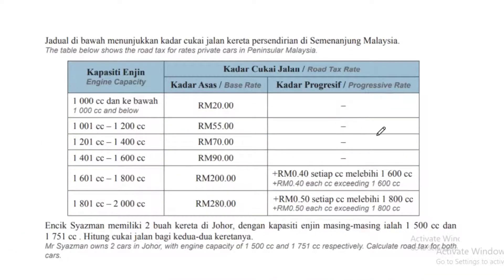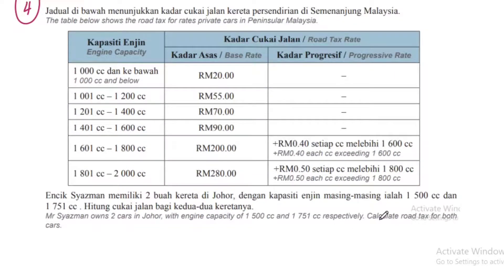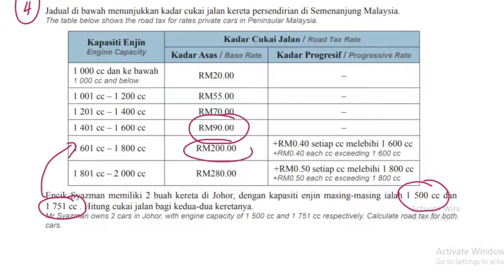Soalan keempat: cukai jalan kereta persendirian di Semenanjung Malaysia. Kalau Sabah Sarawak, kadar lain. Encik Sazman memiliki dua buah kereta di Johor — kapasiti 1500cc satu, 1700cc satu. 1500cc duduk kat sini dalam jadual, 1700cc masuk dalam sini.